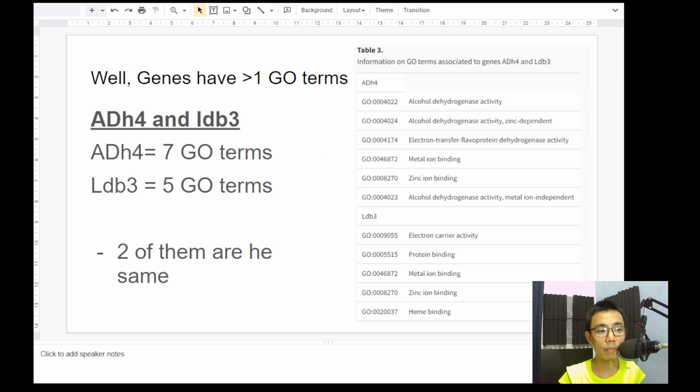Okay. So however, the problem is that genes almost always have more than one GO term annotated to them. So we're going to use two examples here, ADH4 and LDB3, which again, the original genes I pulled directly from the Wang 2007 paper. So ADH4 is actually being annotated with seven different GO terms.